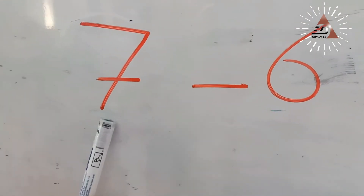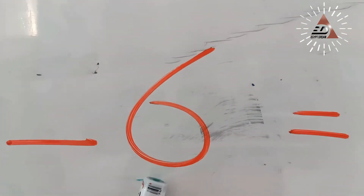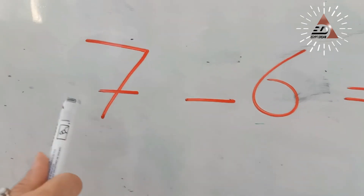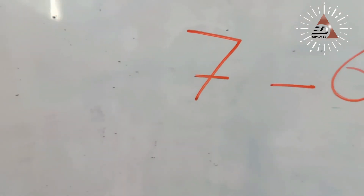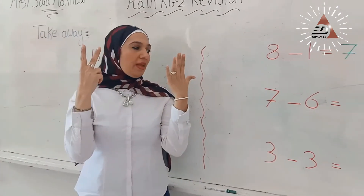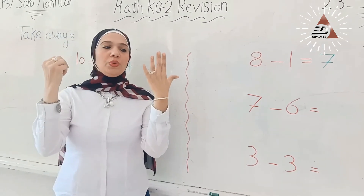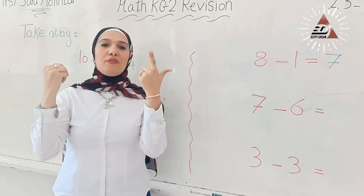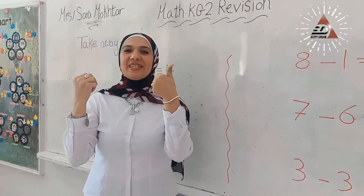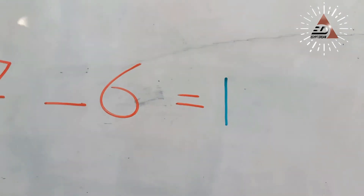What is this number? 7 minus. What is this number? 6. KG2, which is bigger? 7. Put 7 on your hand and take away 6: 1, 2, 3, 4, 5, 6. How many fingers are left? Yes, 1. Write number 1 after the equal sign.